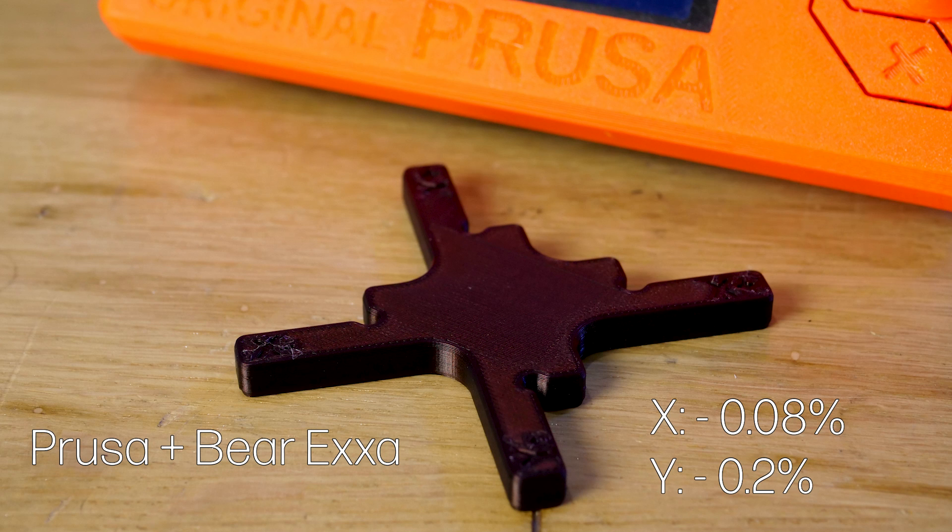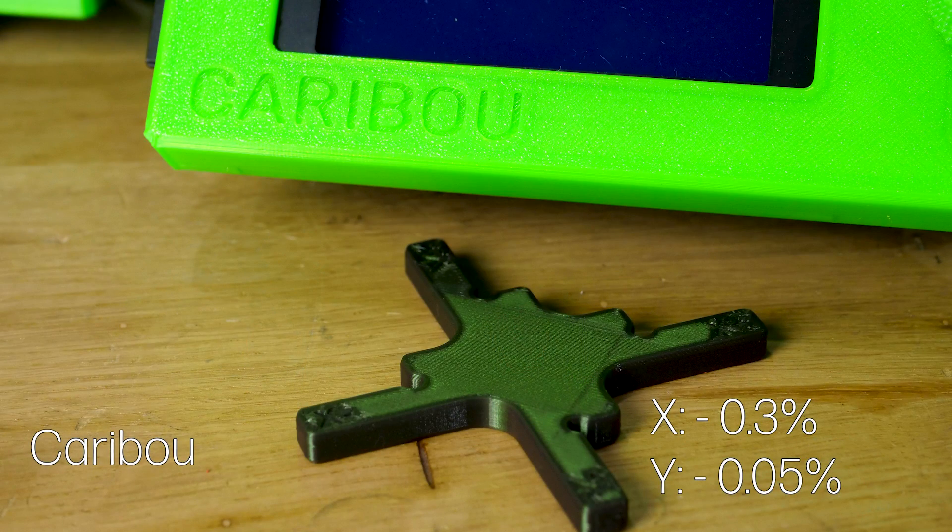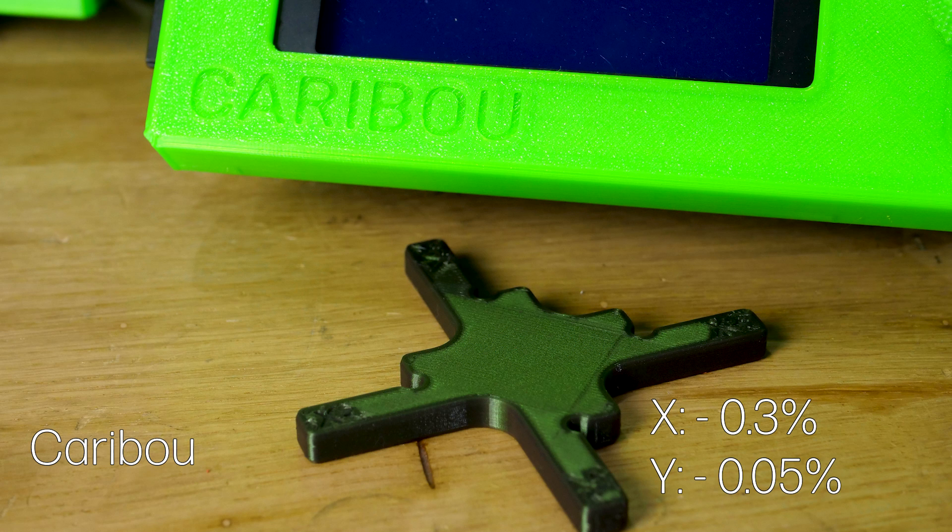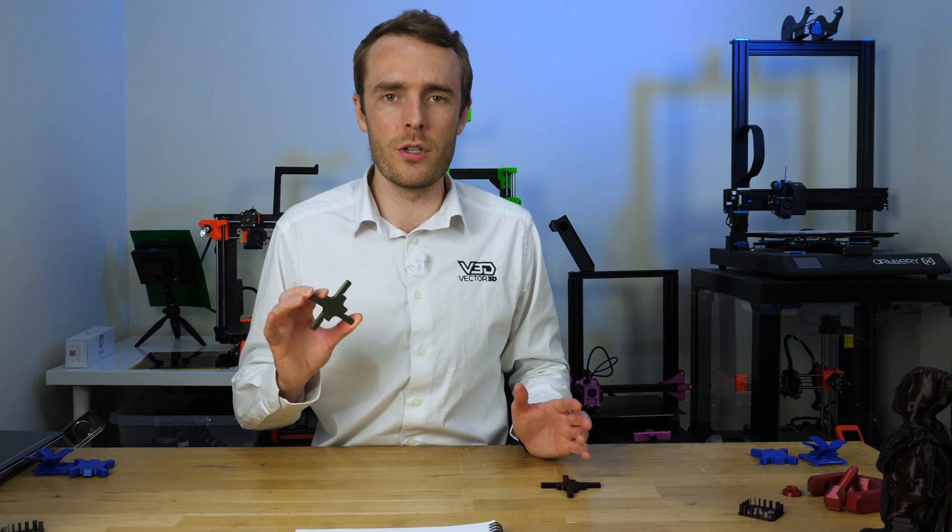The Prusa is showing dimensional accuracy within 0.08% on the x and within 0.2% on y so both reasonably good. The y could do with maybe a little bit of improvement and I think that maybe could just be that the belt on the y-axis could do with a little bit of additional tension. For the Caribou measured part we have the x coming in at minus 0.3% while the y is at minus 0.05. So the y tension certainly very good there while the x is maybe a little bit not quite as good as it could be.